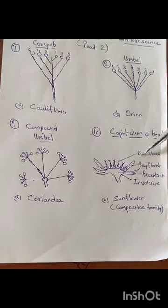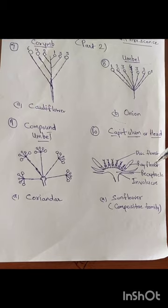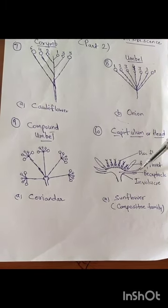The base is called disc florets. The side is called ray florets. The main axis is called flat. It is called the receptacle.